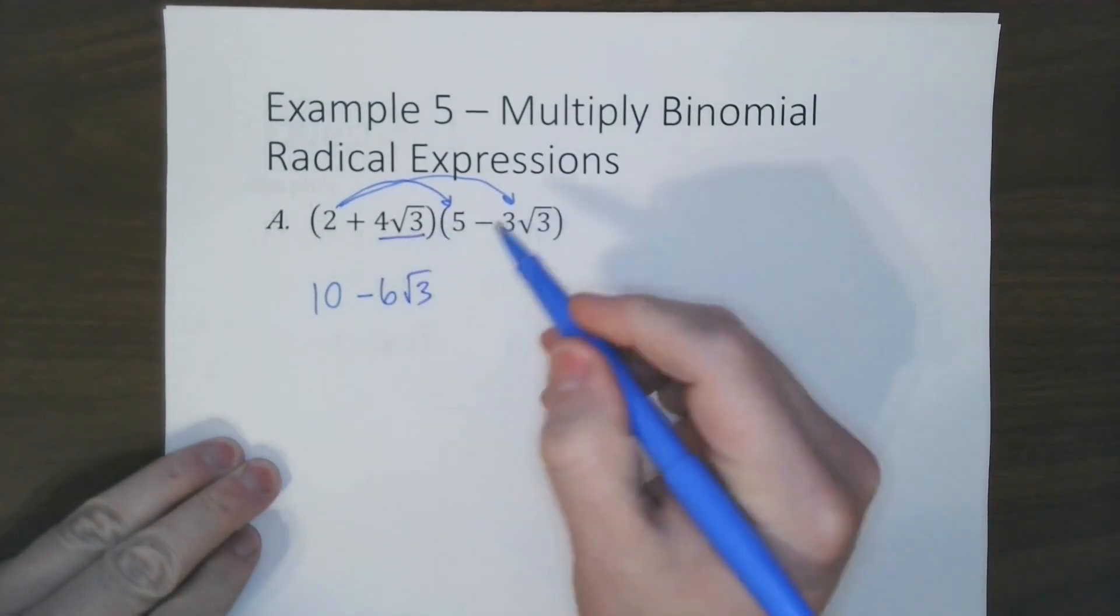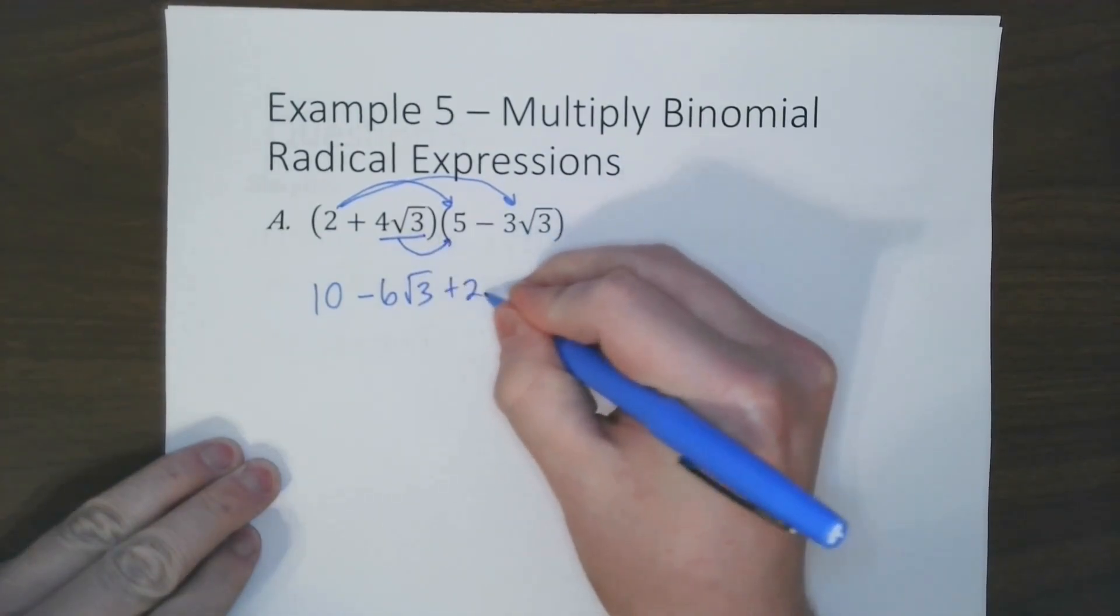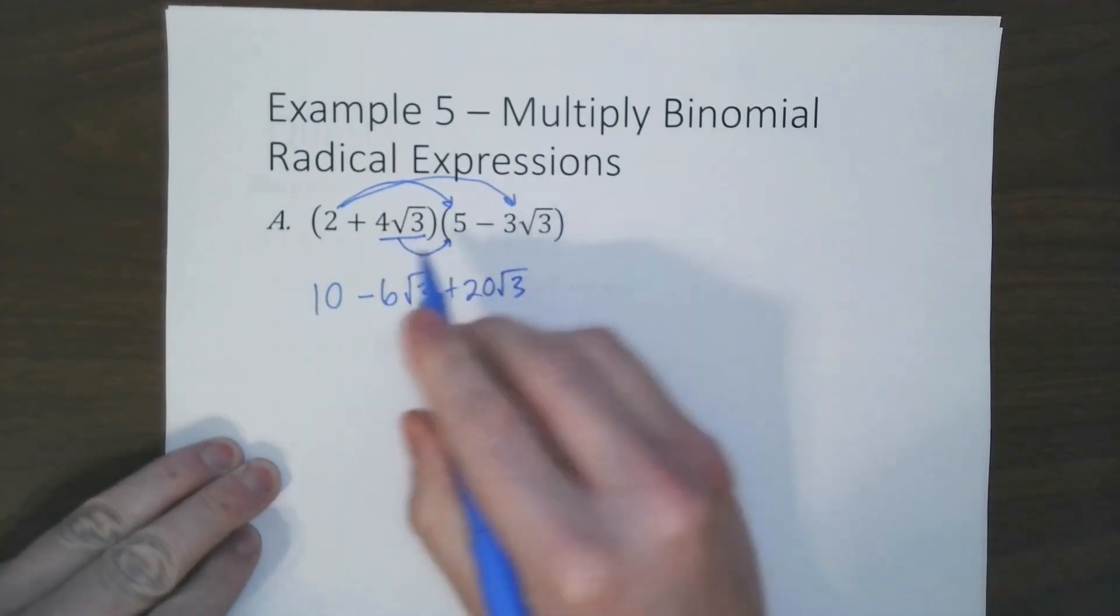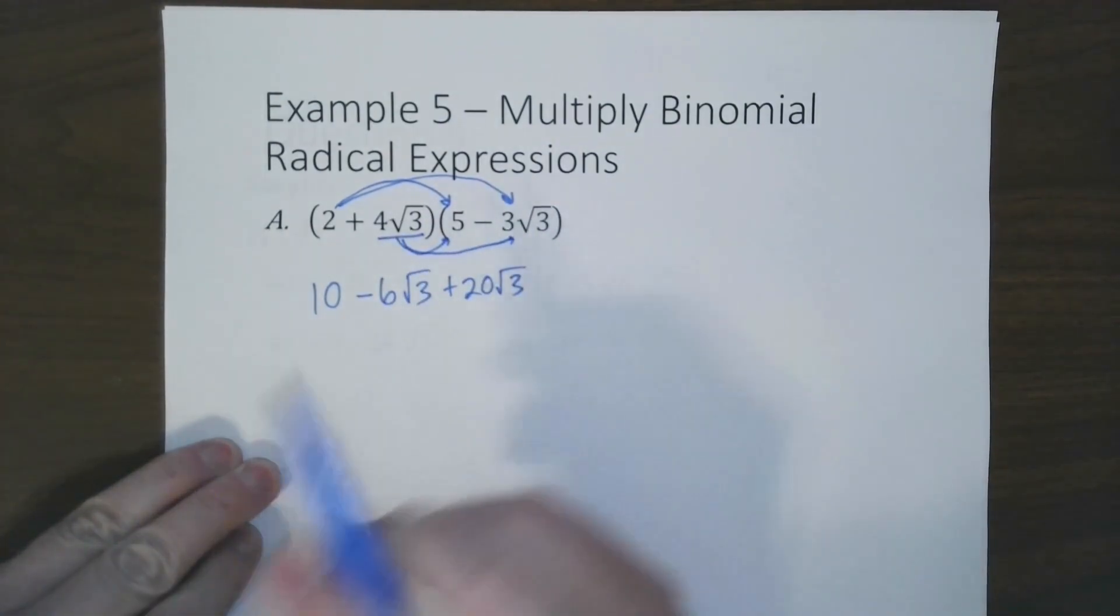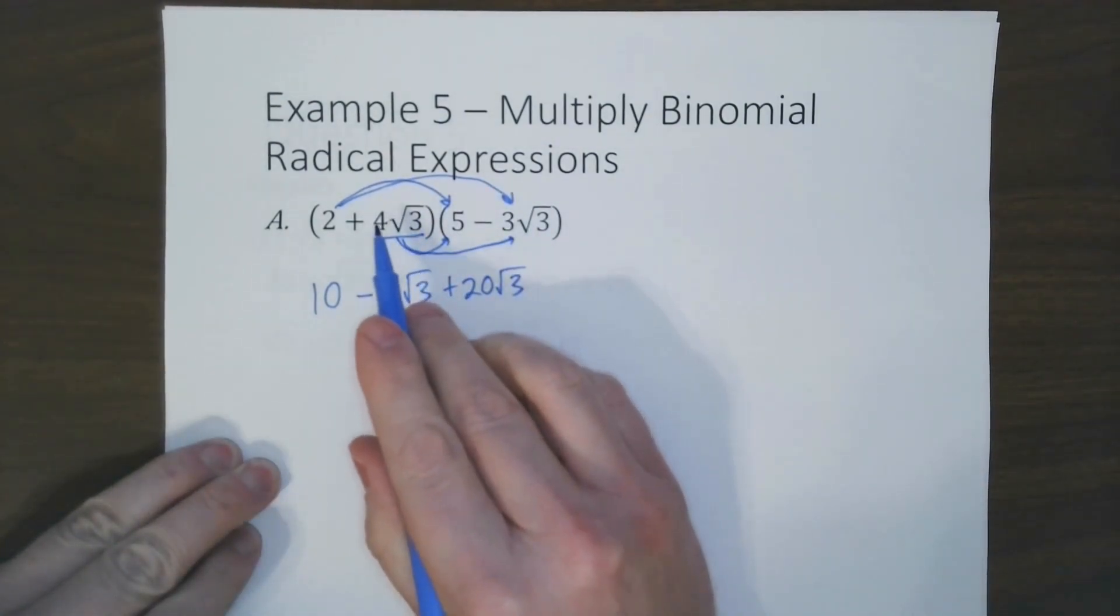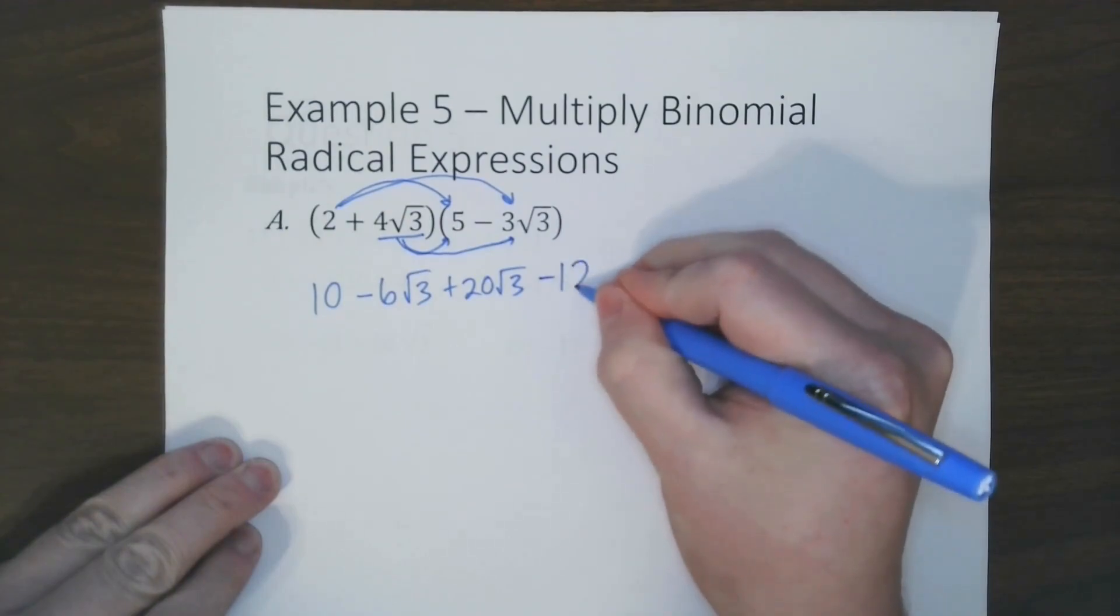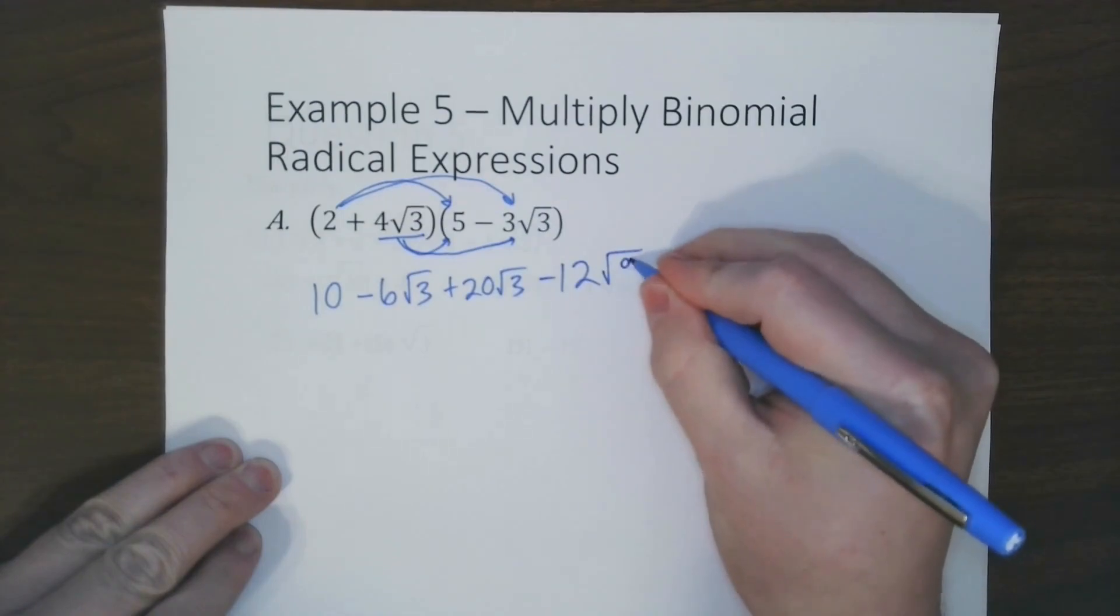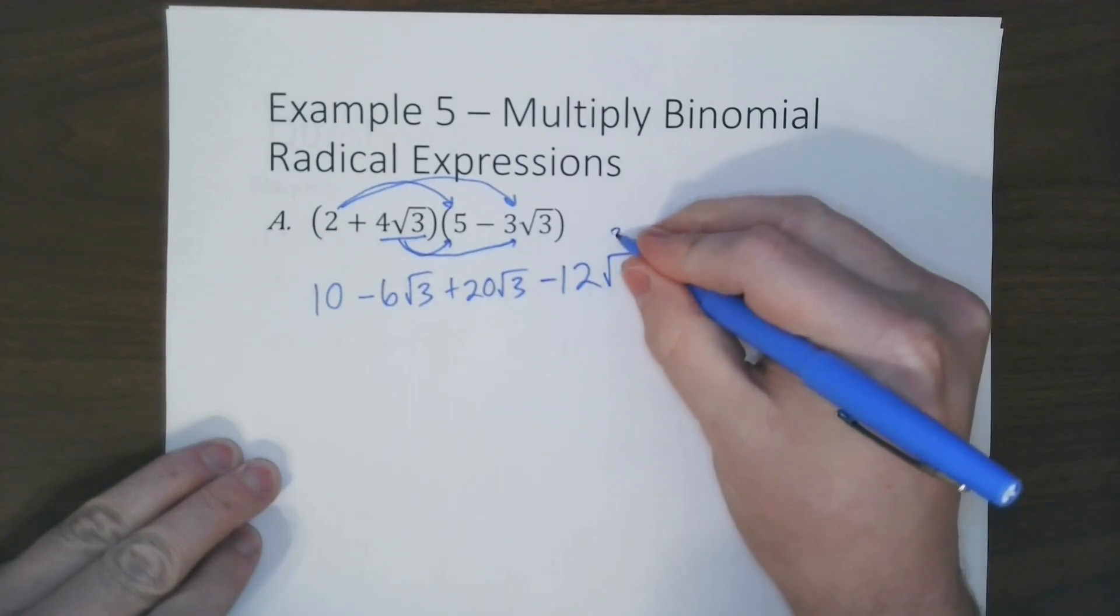Now we're going to do this one. So we go 4 radical 3 times 5, which will be 20 radical 3. Because we multiply 4 and 5 because they are non-radicals. Now when it comes to a radical expression against a radical expression, we take the numbers on the outside and we multiply those together. So 4 times negative 3 would be negative 12. Radical 3 times radical 3 is radical 9. Now we know the square root of 9 is the same as 3. So we can replace this with 3.